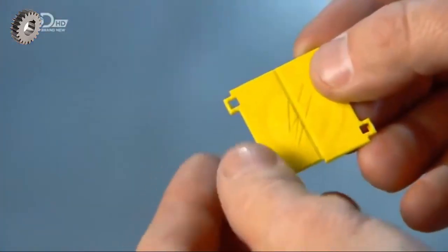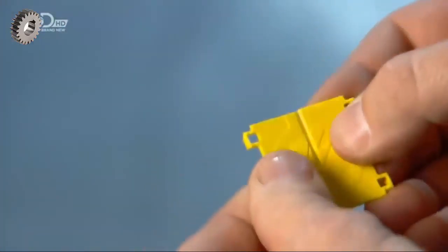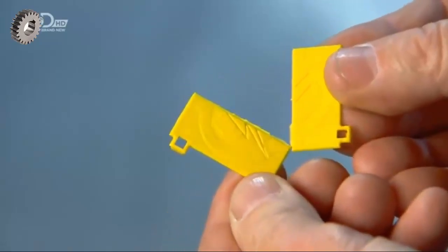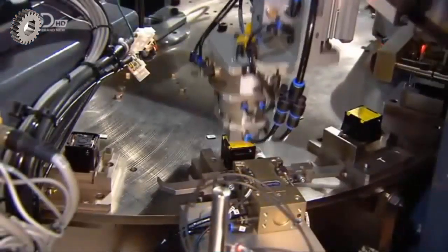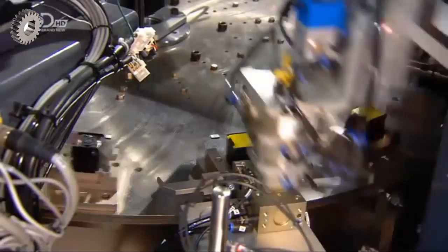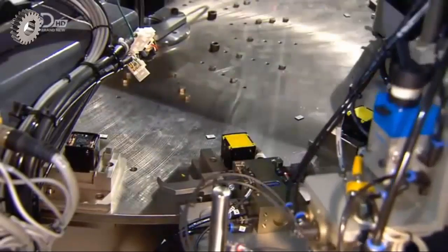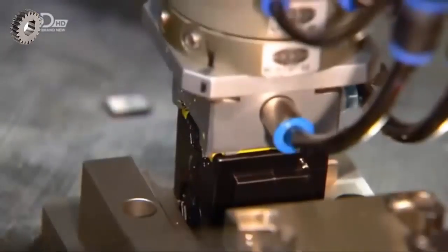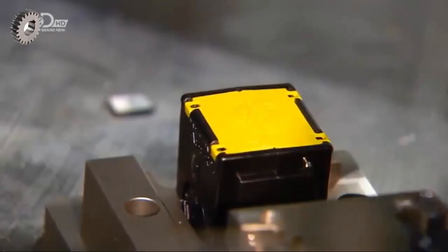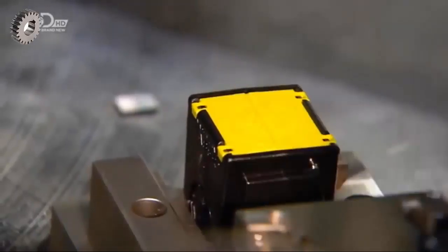The next part is called the blast door. It will break in two as the taser darts are deployed. The robot snaps it in place on top of the cartridge. The door is color-coded to signify the range of the darts. Yellow signifies four and a half meters, in this case.